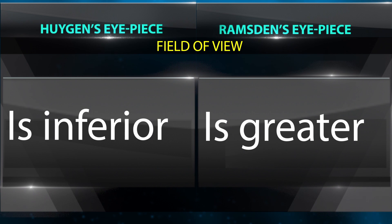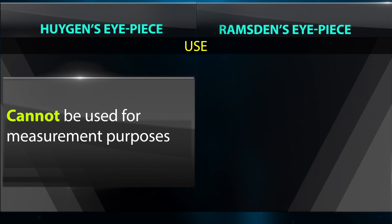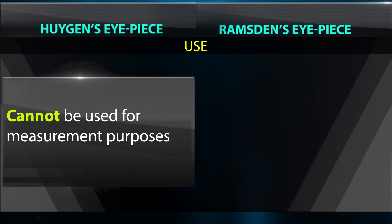Regarding use: the Huygens eyepiece cannot be used for measurement purposes. The Ramsden eyepiece can be used for measurement purposes.